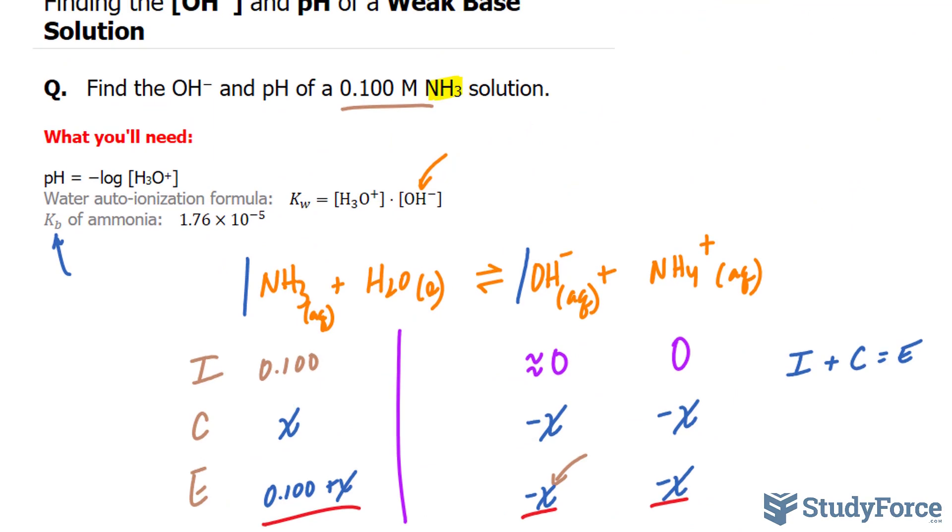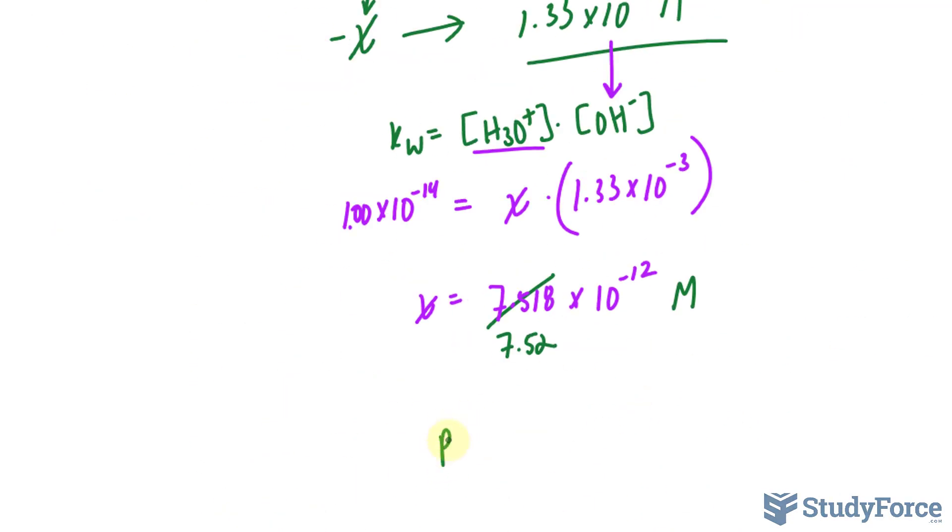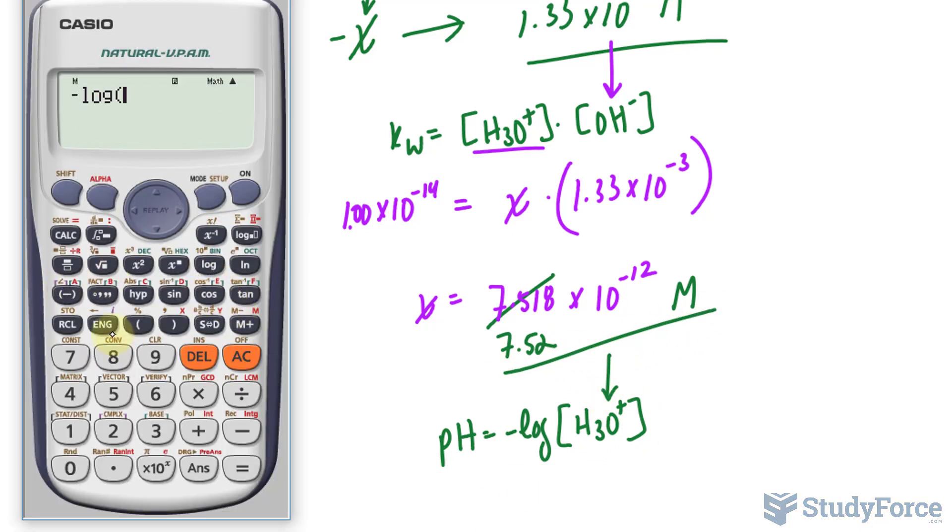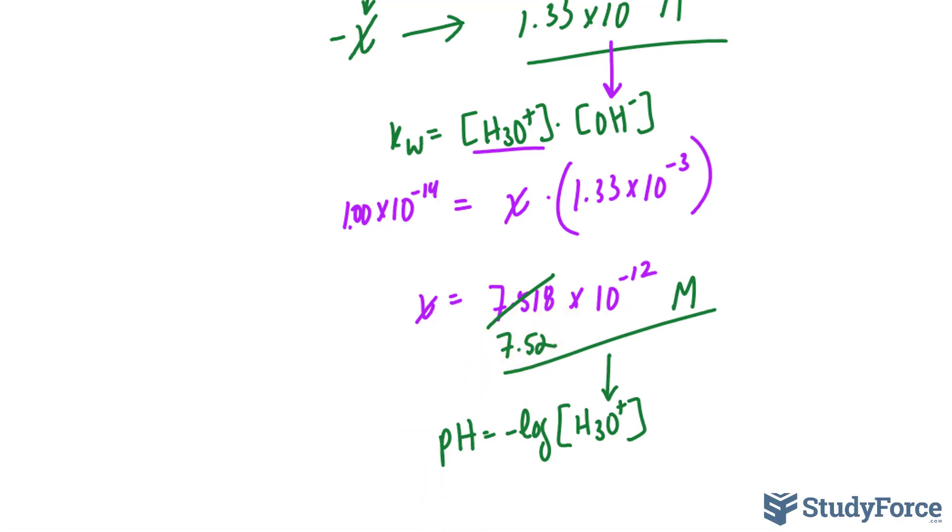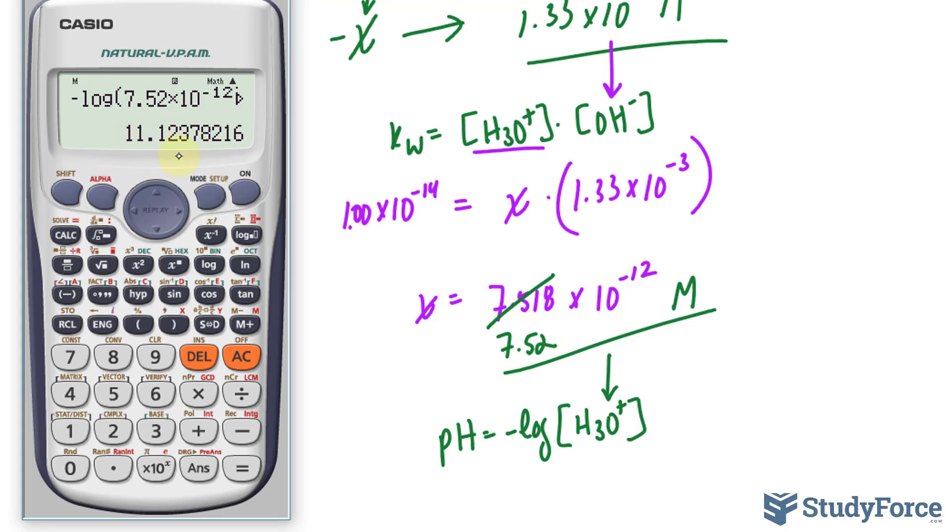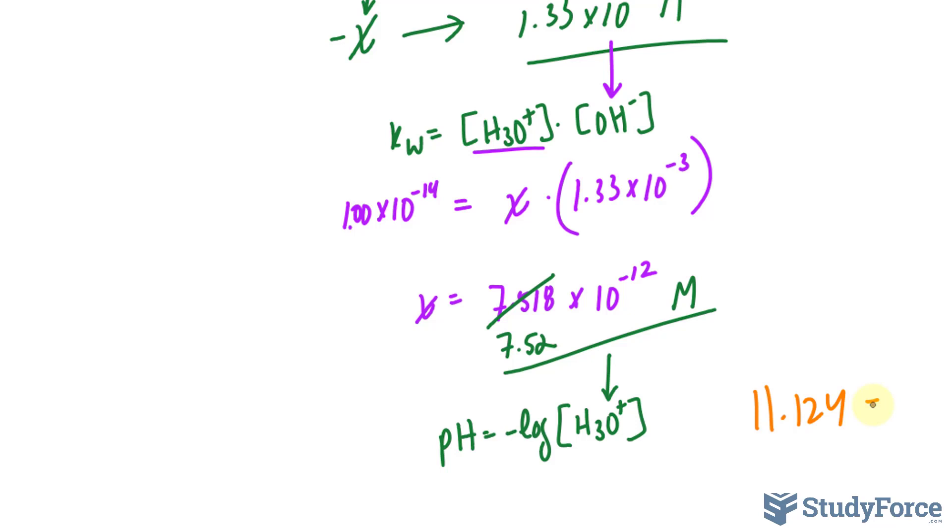We can now finally use the formula pH equals negative log. pH equals negative log of hydronium. So I'll substitute this number right into there. Negative log of 7.52 times 10 raised to the power of negative 12. And this gives us 11.123. Now, we need this to three significant figures after the decimal place because this number, 7.52, was three digits. So 11.124. 11.124 is the pH of the solution.